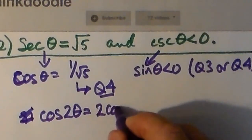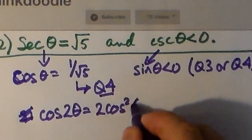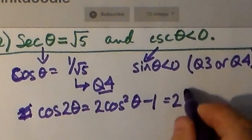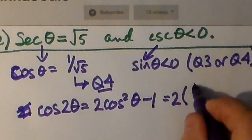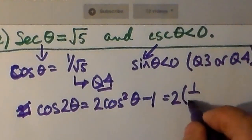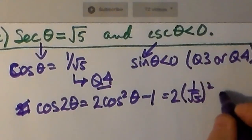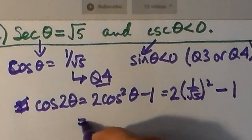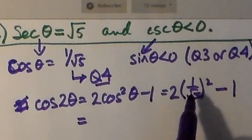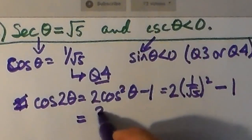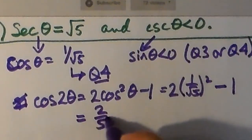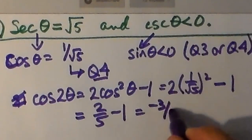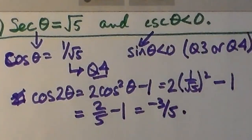Now, we're finding cos 2θ, and we're given secant, which gives us cosine as 1/√5. We apply the formula 2cos²θ minus 1: that's 2 times (1/√5)² minus 1, which is 2/5. When we subtract 1, we get negative 3/5. That's cos 2θ.